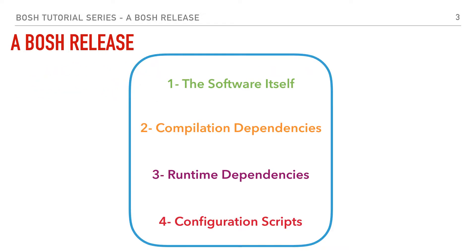So a quick recap from our previous session. We mentioned that a BOSH release contains the actual software bits we need to run itself, in addition to compilation and runtime dependencies. Also, we will need to include some scripts to tell BOSH how to run and compile our software. It's worth mentioning that it's expected for a BOSH release of a software to be self-contained.